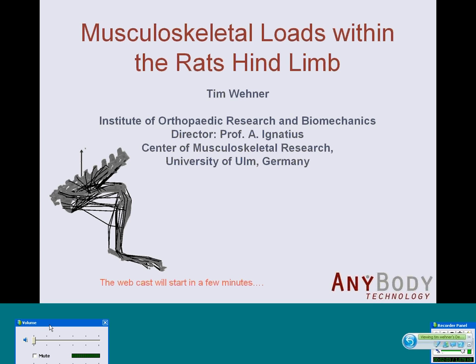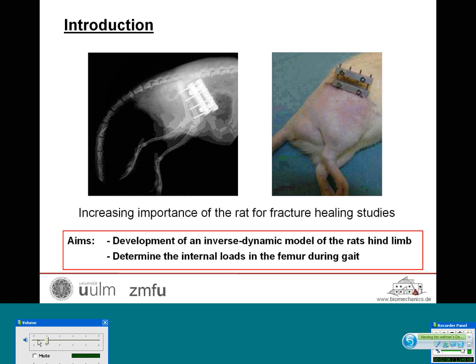The rat is of increasing importance for experimental fracture healing studies. It is well known that the outcome of the fracture healing process strongly depends on biomechanical as well as biological factors. The most important biomechanical factor is the interfragmentary movement — that is, the relative movement of the bone fragments.